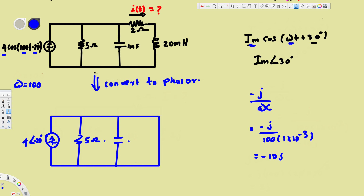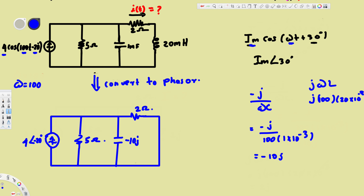We also have the 2 ohm resistor, which stays unchanged. For the inductor, when we convert from time domain to phasor it becomes jωL. Omega is 100 and the inductance is 20 millihenries, which is 20×10⁻³. Multiplying gives us 2, so the new inductor impedance is 2j.